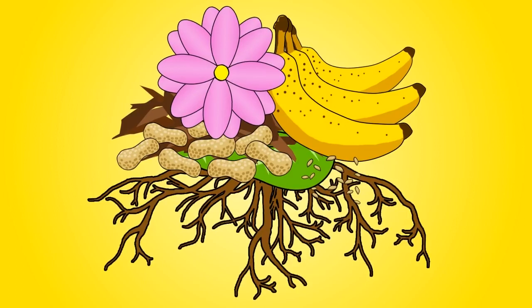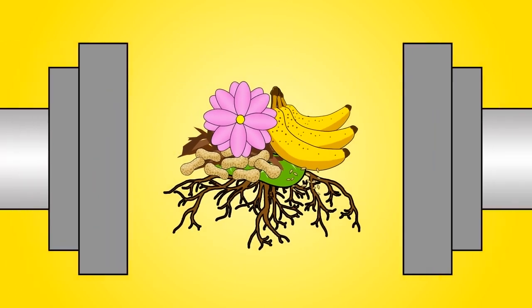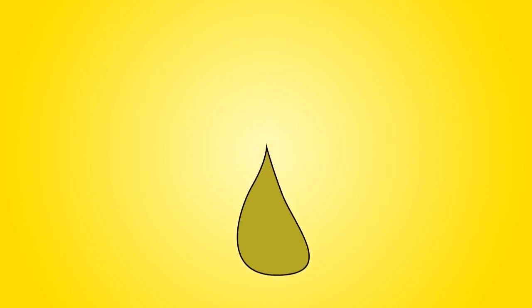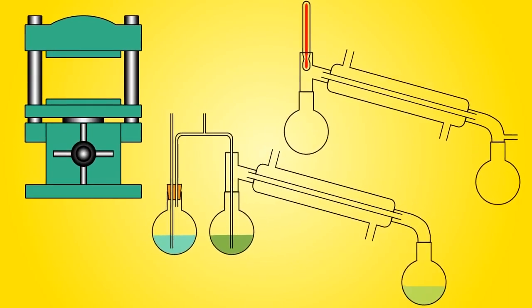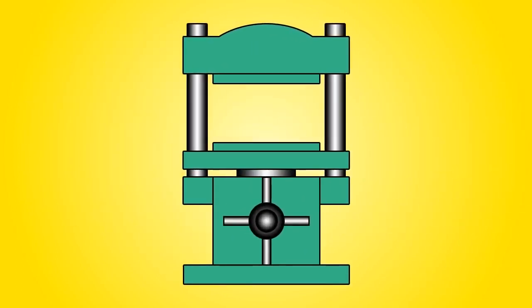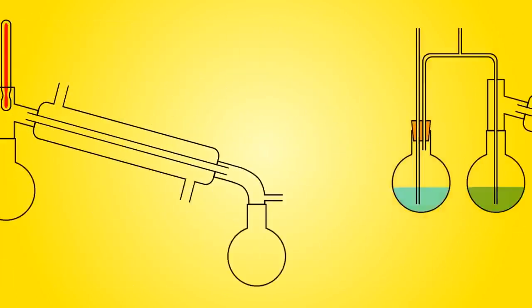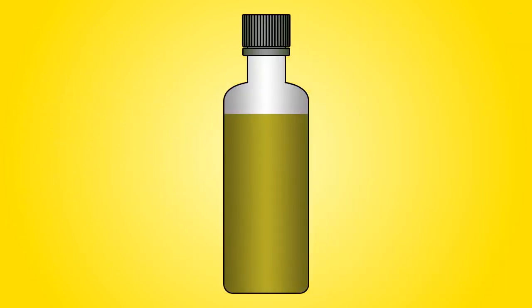However, these oils must be extracted before they can be consumed or used. There are a few key methods to extract plant oils: mechanical extraction, distillation, and steam distillation. Olive oil is obtained from olives by mechanical extraction.